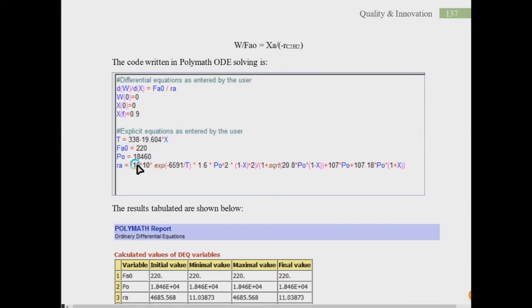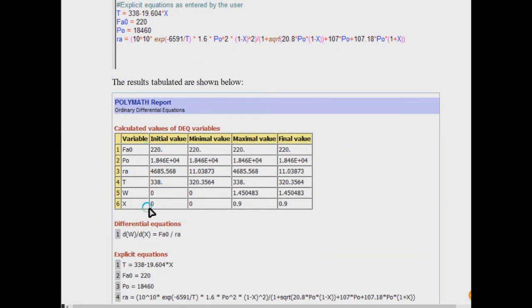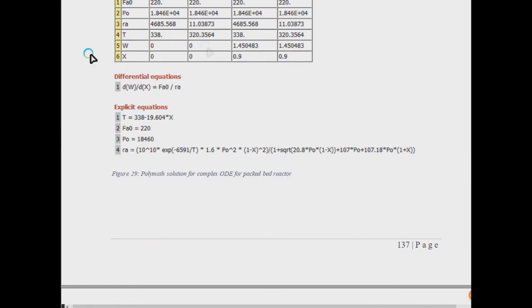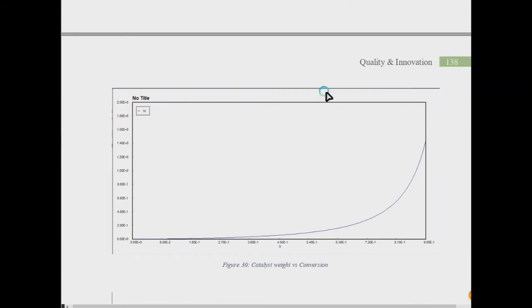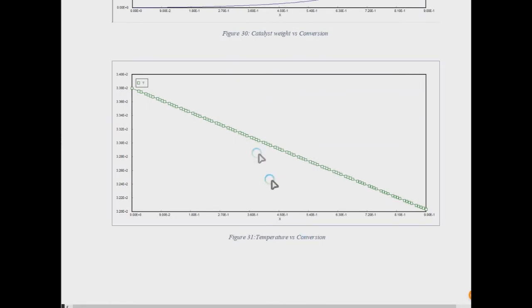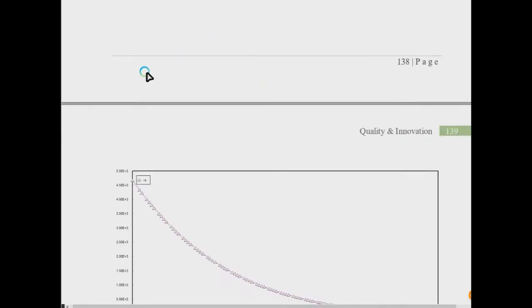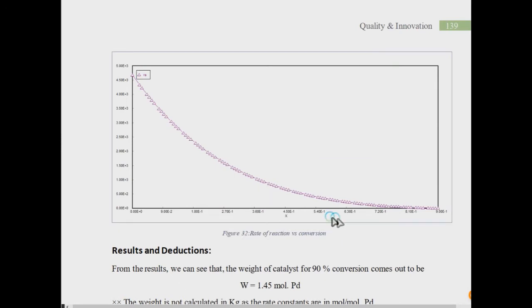All the constraints are written down here and you can easily solve. Polymath results will show for conversion 0.9 or 90 percent, your weight of catalyst will be 1.45 moles. This is what we need. The goodness of Polymath software is you can plot different graphs between W or X, between temperature or conversion, or from rate or conversion data from where you can obtain your kinetics to verify what you have used is correct or not.